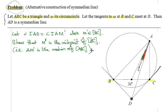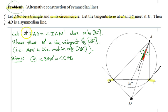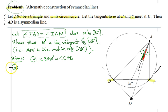Let me list the four givens in the problem. Given (a): angle BAM' equals angle CAD. This angle over here equals this angle over here, which follows because AI is the angle bisector — if the two angles formed by AI and AD, and AI and AM', are equal, then the remaining portions must be equal. So angle BAM' equals angle CAD by the angle bisector.